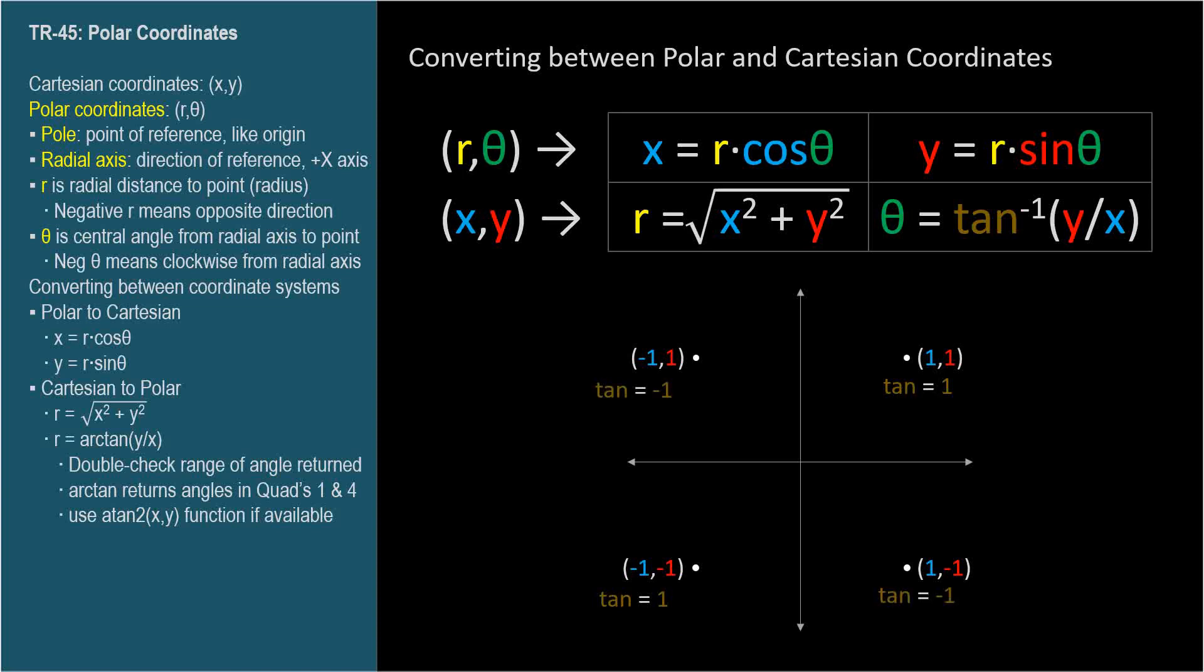Starting in quadrant 1, our calculator will tell us that the inverse tangent of 1, that is, the angle whose tangent is 1, is 45 degrees, which matches our expectation. See TR-25 for inverse trig functions on a calculator. Down in quadrant 4, our calculator will tell us the inverse tangent of -1, that is, the angle whose tangent is -1, is -45 degrees, which also matches our expectations. Here in quadrant 2, the tangent is -1, just like it was in quadrant 4. So our calculator is going to tell us again that the inverse tangent of -1 is -45 degrees, which does not correspond with our expectation of 135 degrees.